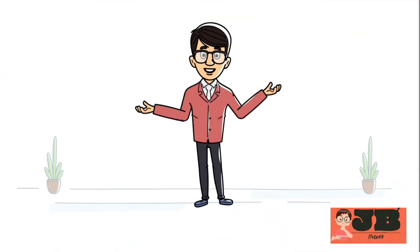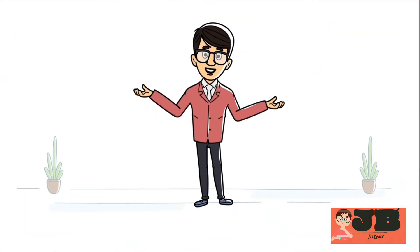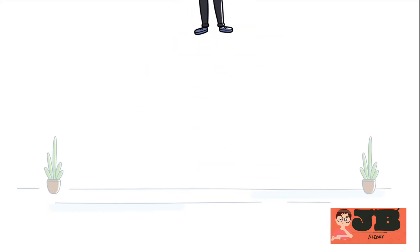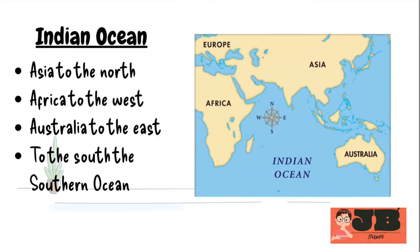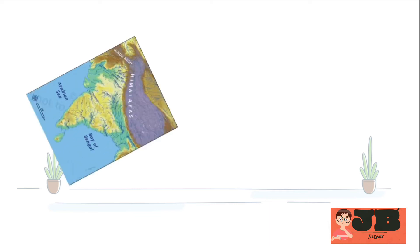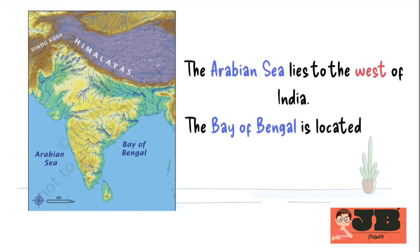Let's understand the boundaries of the Indian Ocean. The Indian Ocean is bordered by Asia to the north, Africa to the west, and Australia to the east. To the south, it is connected to the Southern Ocean. On either side of India, there are two important parts of the Indian Ocean: the Arabian Sea lies to the west of India, and the Bay of Bengal is located to the east of India.